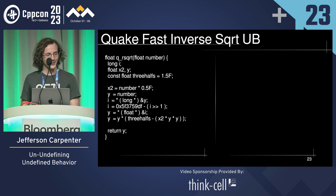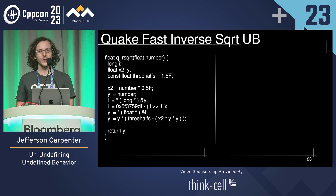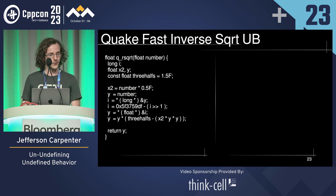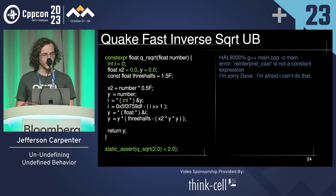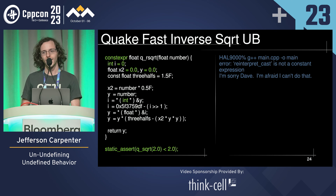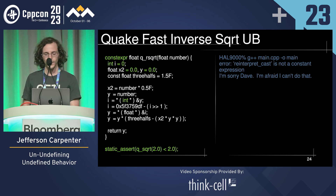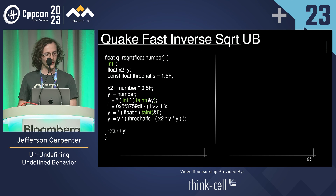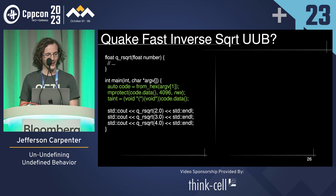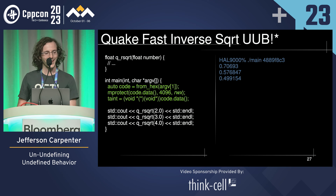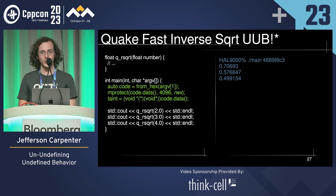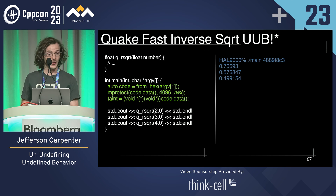Last, let's look at the Quake fast inverse square root — this is another thing that we can un-undefined. This is UB. Compilers are pretty generous and they will run this for you anyway, but we can check that it is UB by running it in a constexpr context. We can add our functions around the casts and pass in code from the command line again. Now the compilers are required to do this because it could be defined — our function could return an int object and then a float object.